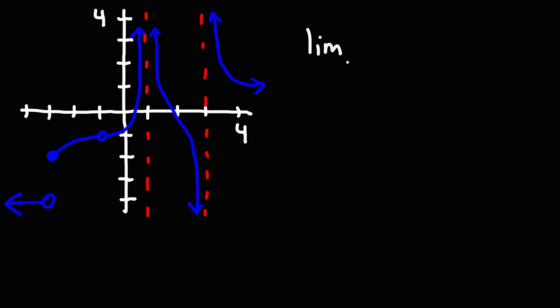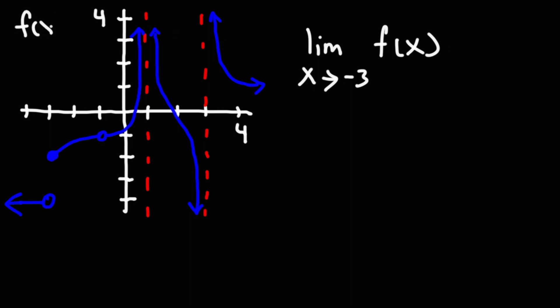How do you tell if the limit exists? How do you tell if it doesn't exist? In this video we're going to answer that question. So let's say we want to find a limit as x approaches negative 3, and let's say this graph represents f of x. How do you determine if this limit exists or not?